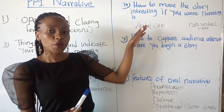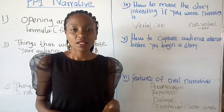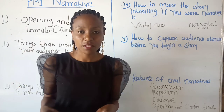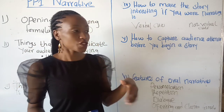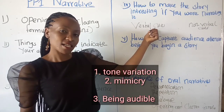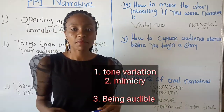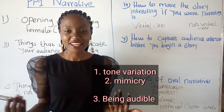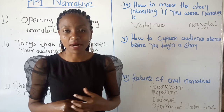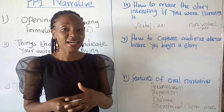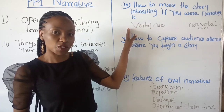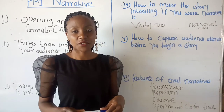For verbal cues: number one, tone variation — the rising and falling tone. When saying the opening formula 'long time ago,' you use the falling tone to capture the attention of the audience. Number two, mimicry — you imitate the voice of characters. You can also ensure you are audible enough. Those are the verbal cues.